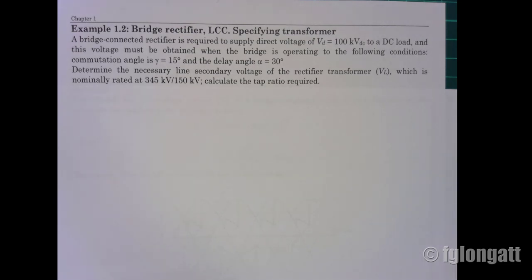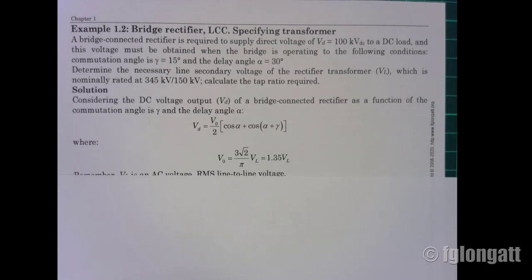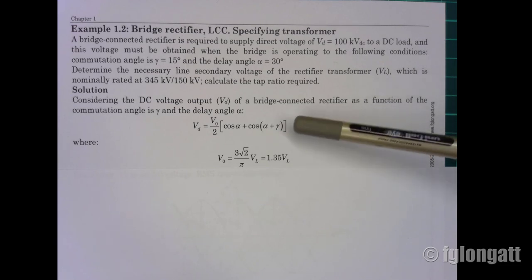The first thing that you must remember is there is a classical equation for rectifiers that says the DC voltage that we can obtain from a rectifier depends on alpha and gamma.